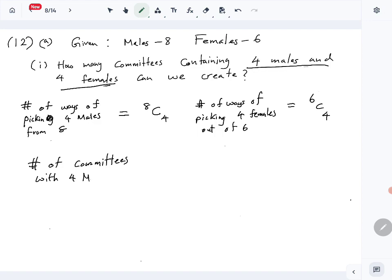The number of committees with 4 males and 4 females is given by 8C4 times 6C4. This is the number of ways 4 males can be picked out of 8, times the number of ways 4 females can be picked out of 6, which gives the total number of committees.